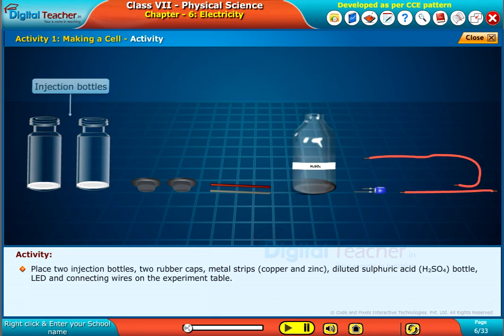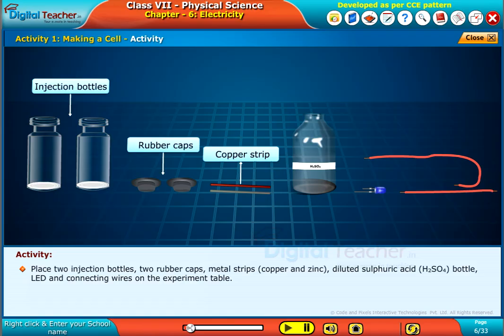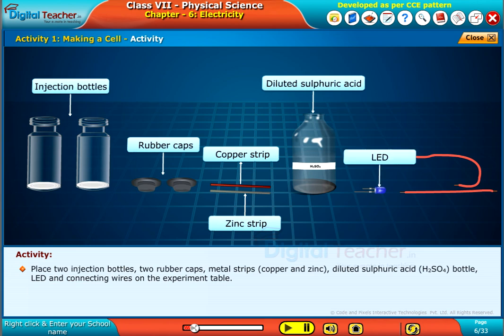Place two injection bottles, two rubber caps, metal strips of copper and zinc, diluted sulfuric acid H2SO4 bottle, LED and connecting wires on the experiment table.